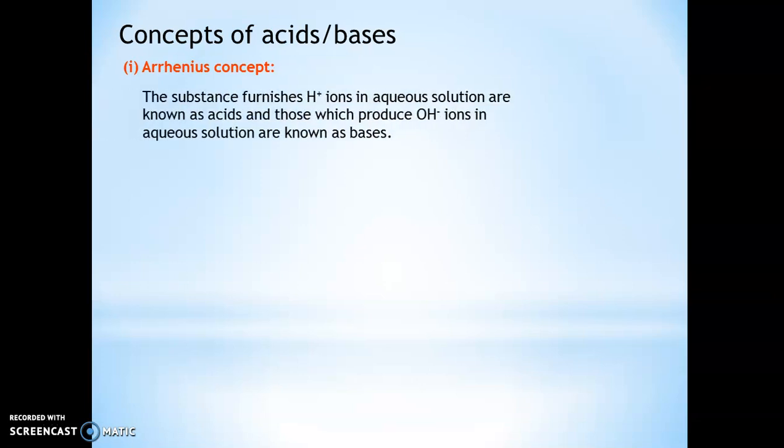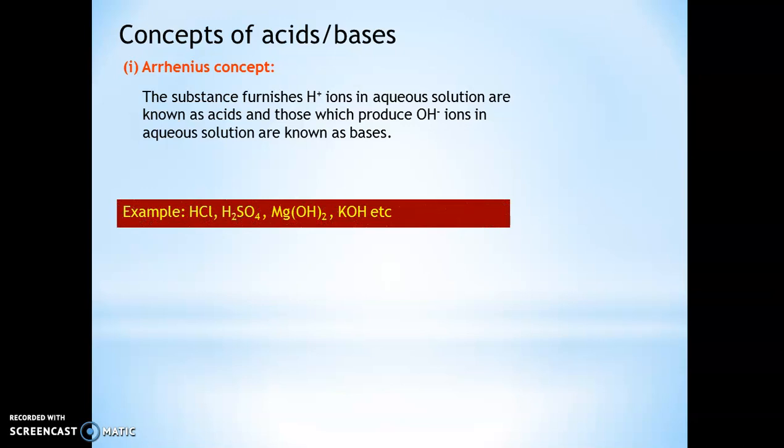Now we will define the concepts of acids and bases. According to Arrhenius concept, the substances which furnish H+ ions in aqueous solution are known as acids, and those which produce OH- ions in aqueous solution are known as bases. For example, HCl, H2SO4 give H+ in aqueous solution, so we call them acids. NaOH, Mg(OH)2 give OH- ions in aqueous solution, so these are known as bases.